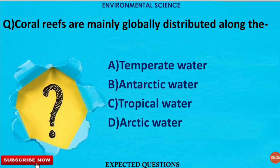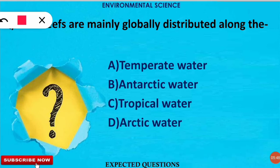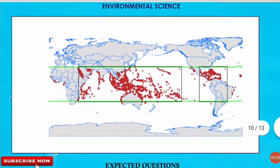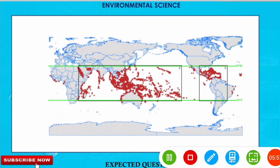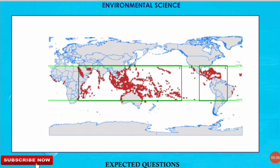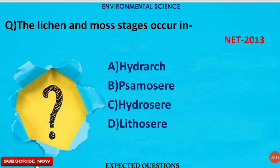The next question is: coral reefs are mainly globally distributed along which of the following waters? The correct option is option C — tropical water. Coral reefs are distributed mainly between 30 degrees north and 30 degrees south, which is the tropical region, and that is why they are found in tropical waters.